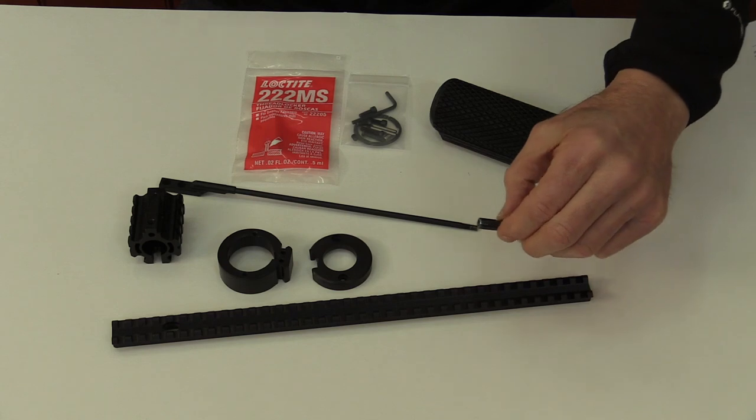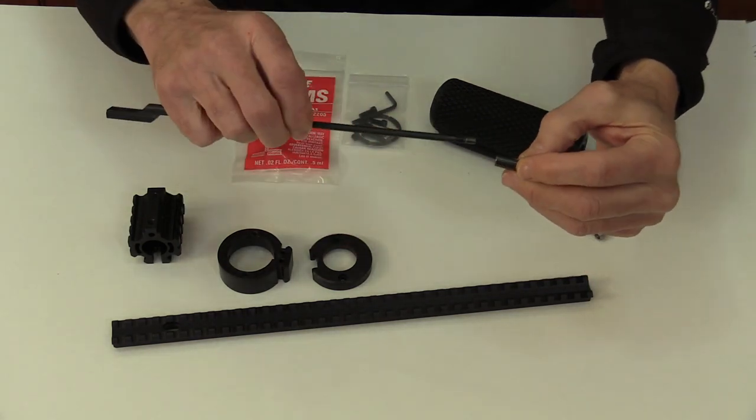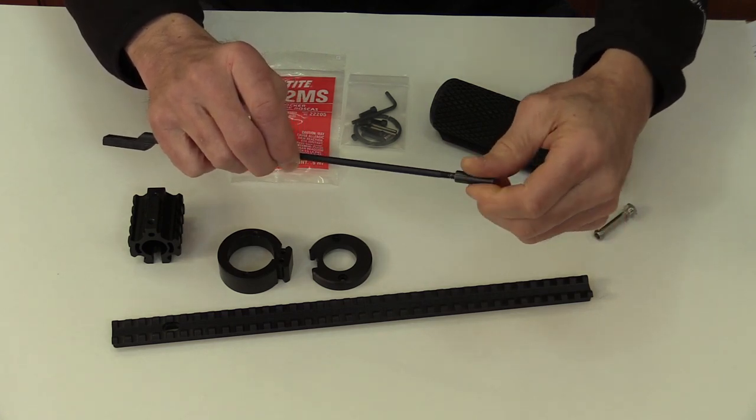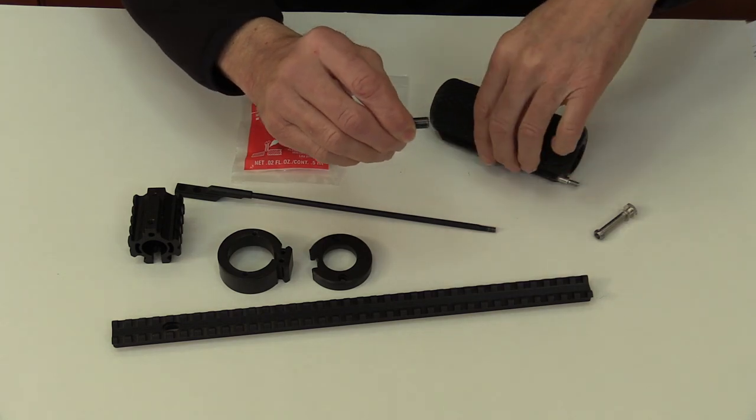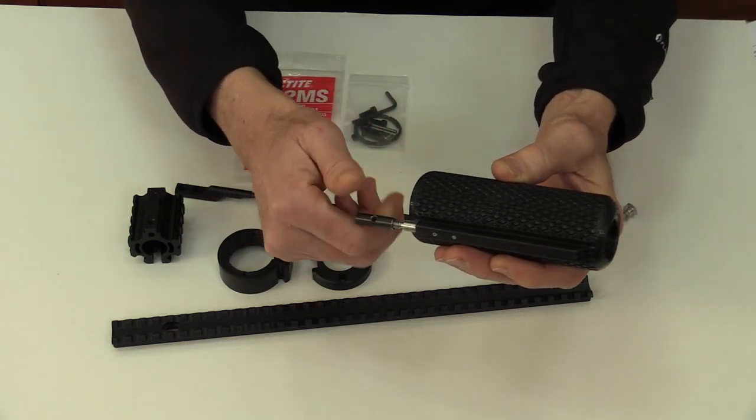A turn buckle nut that joins the pump hand grip assembly and the modified bolt carrier key together. One end of the nut has right hand threads, the other end has left hand threads. Turning the nut in one direction draws both pieces together. Turning it in the other direction separates the two.